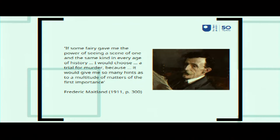So Charles Dickens, a noted writer even at the time, booked a room with some friends to watch a double execution at dawn. He talks about the wickedness and levity of the immense crowd and the atrocious bearing, looks and language of the assembled spectators. That's just really interesting — but is it more than that? What can this lead us to in the present? I was reminded of a quote from Frederick Maitland, an early legal historian, who wrote: 'If some fairy gave me the power of seeing a scene of one and the same kind in every age of history, I'd choose a trial for murder, because it would give me hints to a multitude of matters of first importance.'